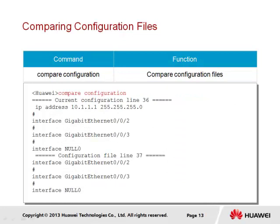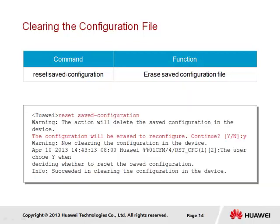Prior to saving the changes of a current configuration file, it is possible to verify the changes that are to be saved through the compare configuration command. This allows a line-by-line comparison of changes between the current configuration file and the next startup configuration file. If a configuration file is specified in the command, the current configuration file will be compared against the configuration file that has been specified. If the configured contents of a saved configuration file are no longer required, the file can be deleted using the reset saved configuration command, which will effectively remove the device startup configuration file from storage. The user will be prompted before erasing of the configuration file is performed.